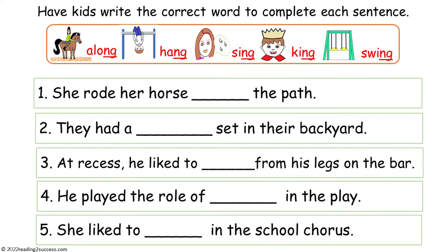Now have kids write the correct word to complete each sentence. Their choices are along, hang, sing, king, and swing. This is the completed example.